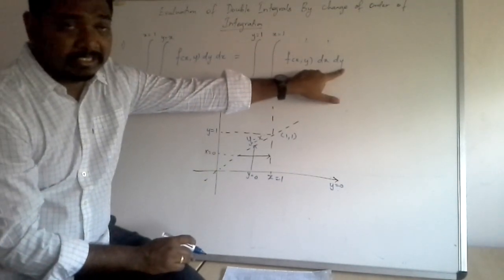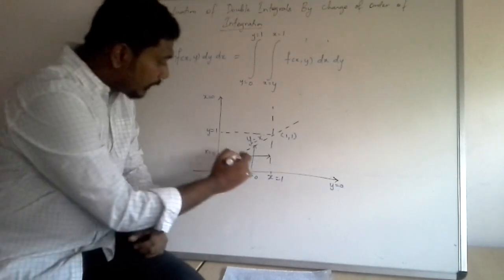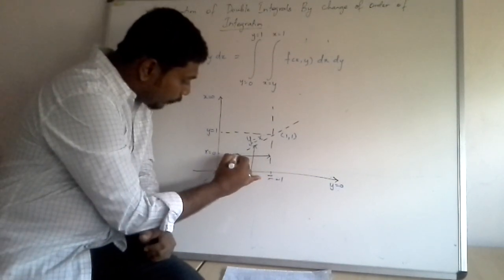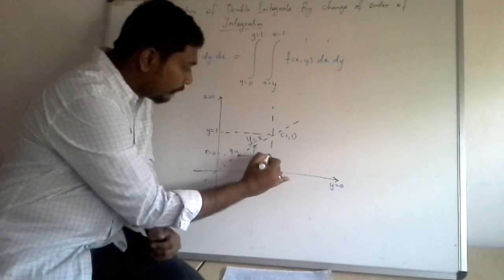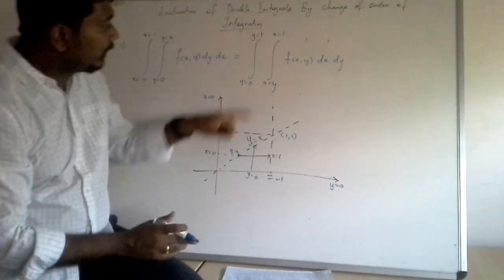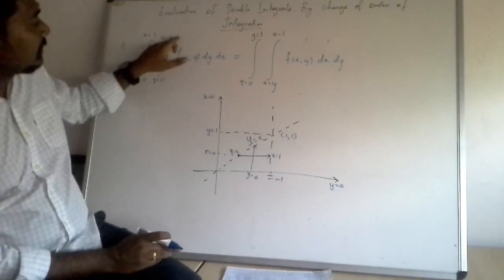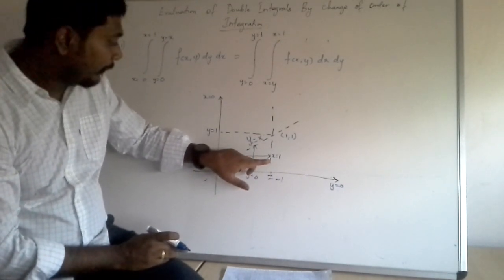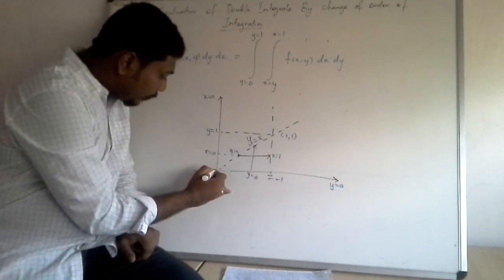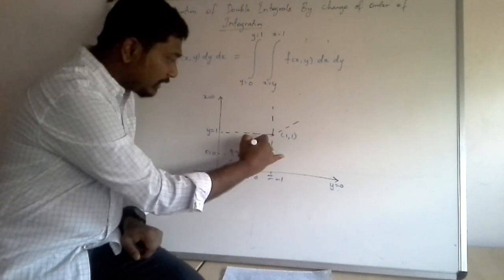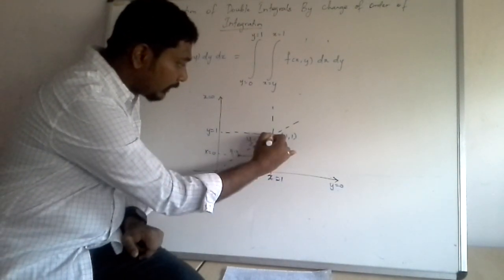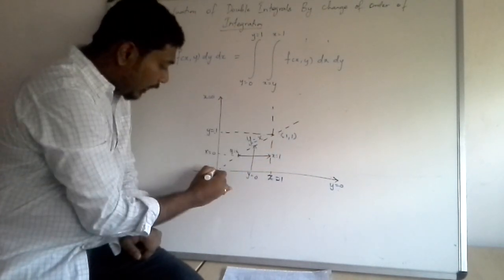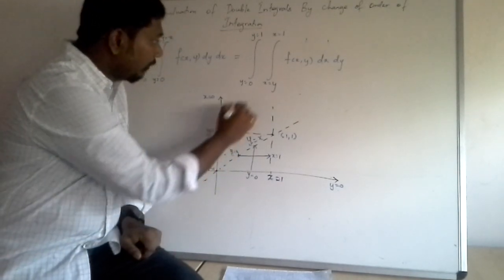When I change my integral from dy dx to dx dy the limits will change. To get the new limits, draw a line parallel to the x-axis. This line goes from the line y = x to the line x = 1, so x runs from y to 1. For the y limits, look at the corner points: one point is (1,1) on y = x and x = 1, and the other is (0, 0) and the range gives y from 0 to 1.